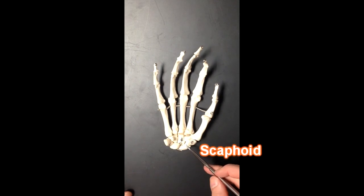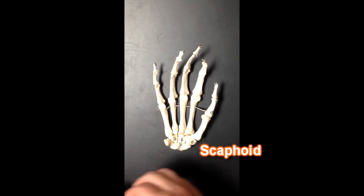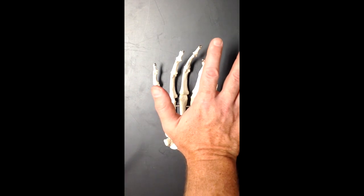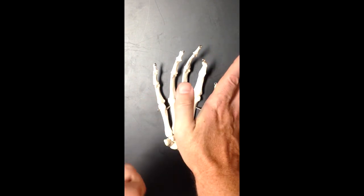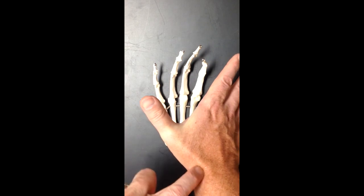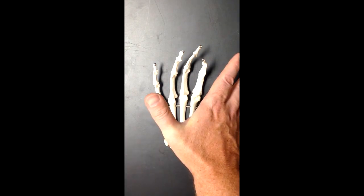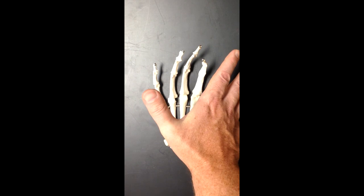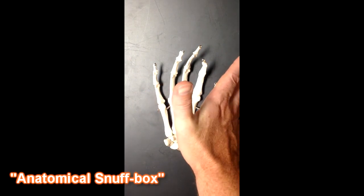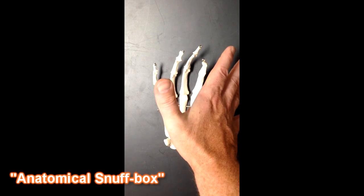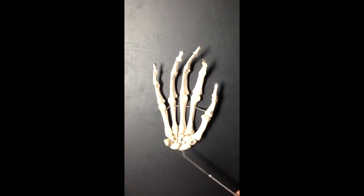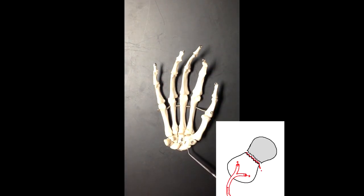The scaphoid bone right here oftentimes gets fractured when someone lands on an outstretched hand. That bone is located in here, right in that space known as the anatomical snuff box. If there's pain in the anatomical snuff box, it could be that the scaphoid bone has been fractured, and this scaphoid bone is really difficult to heal.